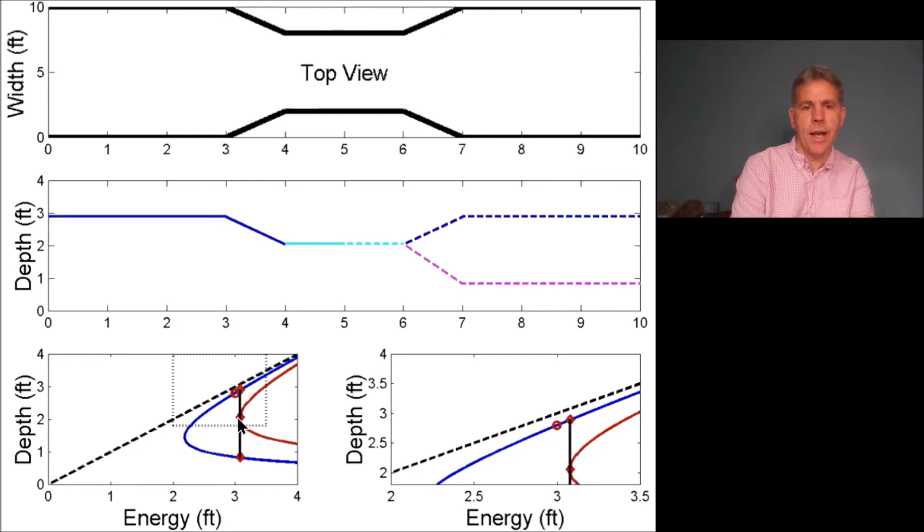Which is to say that the flow has now reached this minimum energy point on the EY diagram. Downstream we see these dashed lines corresponding to super and subcritical flow. They are the alternate pairs, the subcritical alternate and the supercritical alternate.